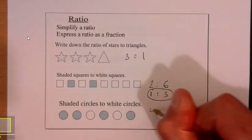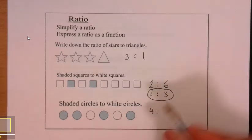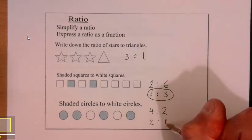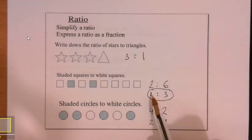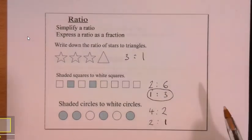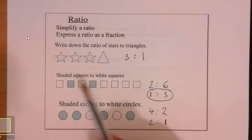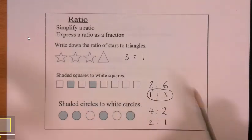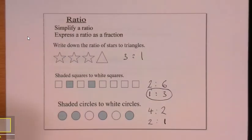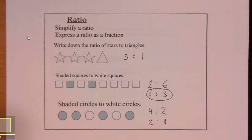Normally when you write a ratio most people would generally write the smaller number first, but it doesn't really matter. Look to see what the question says. For example, if it said white squares to shaded squares, it would be the other way around. Just read carefully what it says. Let's have a look at some slightly different questions.